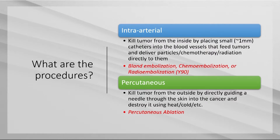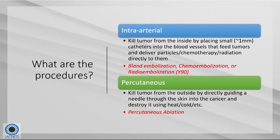What are the procedures we perform? They're divided into two main categories: intra-arterial procedures and percutaneous procedures. Intra-arterial procedures involve taking a small tube or catheter, going through the artery in the wrist or groin, and fishing a small tube — about one millimeter in size — all the way to the blood vessels that feed the tumors we're targeting. Once we get a catheter there, we can deliver particles, chemotherapy, or radiation directly to the tumor. These procedures are known as bland embolization, chemoembolization, or radioembolization.